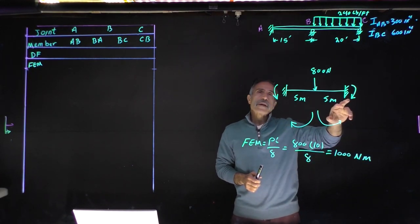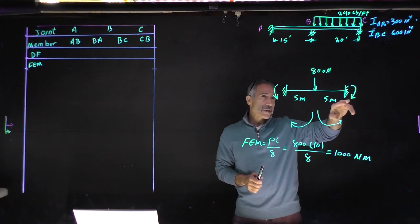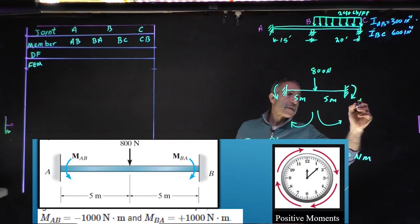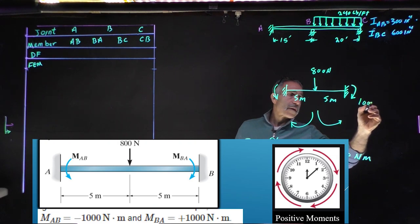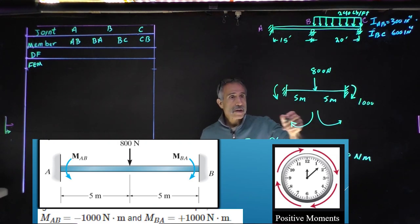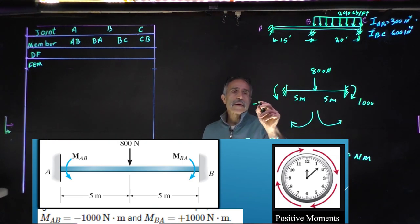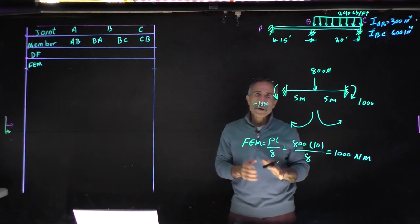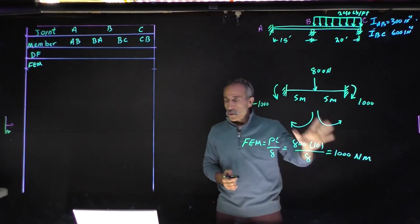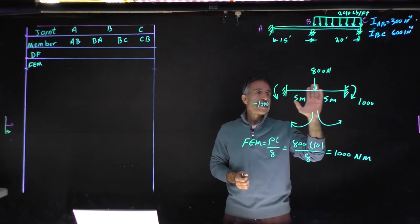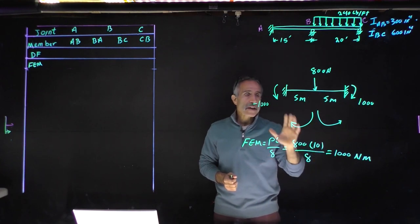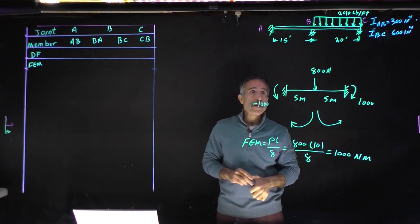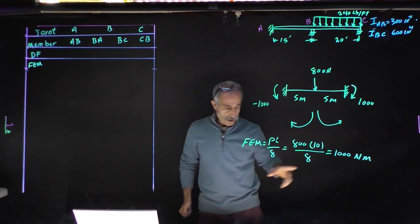Look at the direction: this one is going clockwise, so that's positive 1,000. And this one is going counterclockwise, so that's minus 1,000. You have to be careful when you do your fixed end moment — follow the right sign and calculate the right moment. This was one of the important steps.